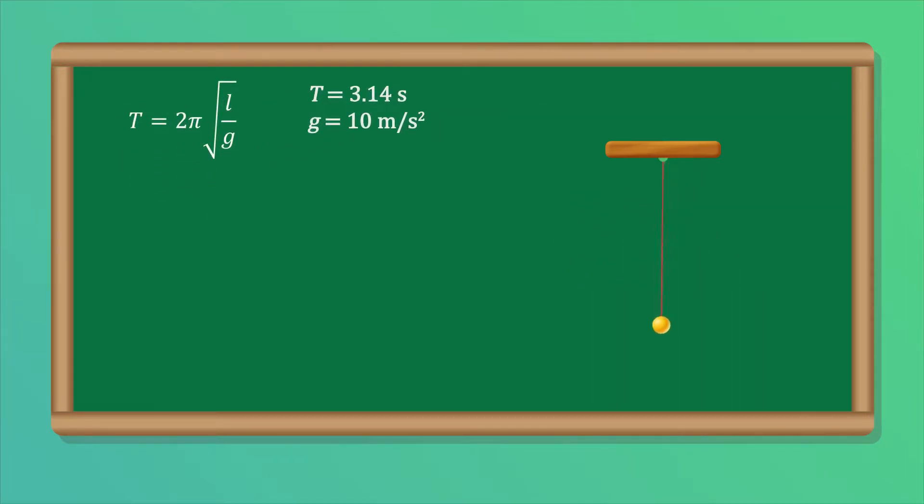Using the formula for the time period of a pendulum, we can calculate its length. After inputting the given values, we can arrange the equation to calculate the length. In this case, the length comes out to be 2.5 meters.